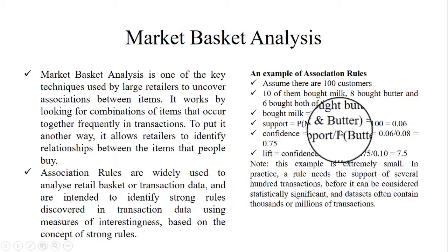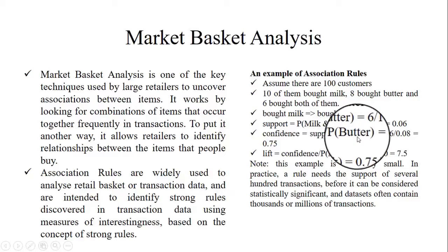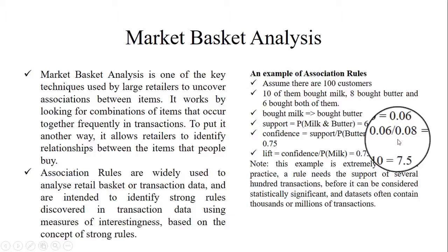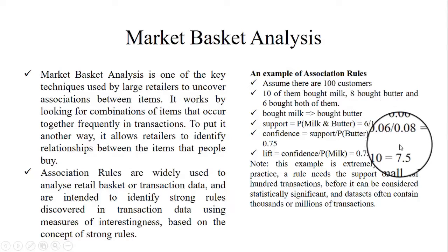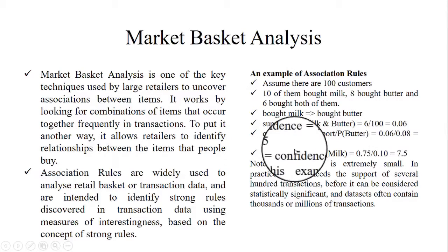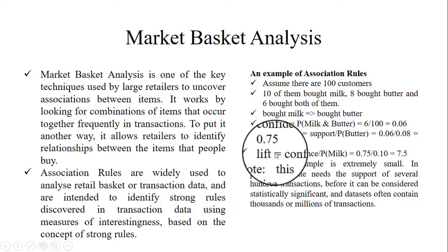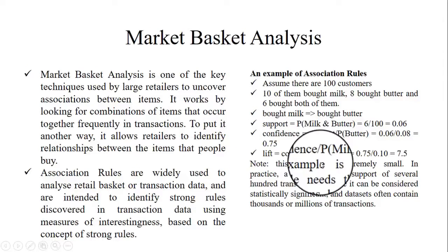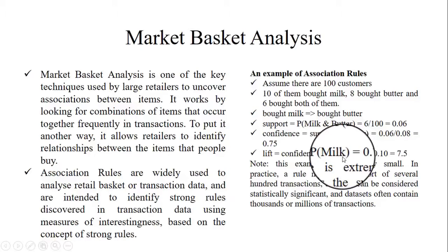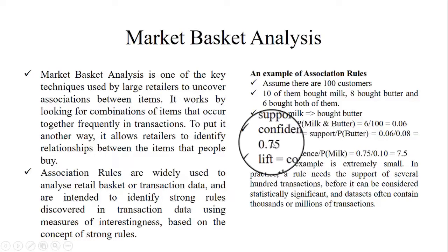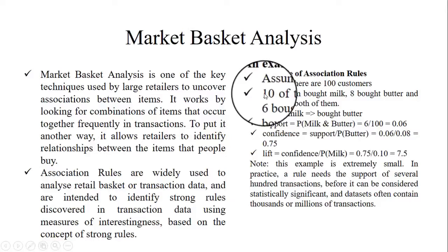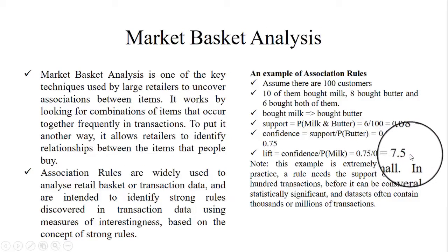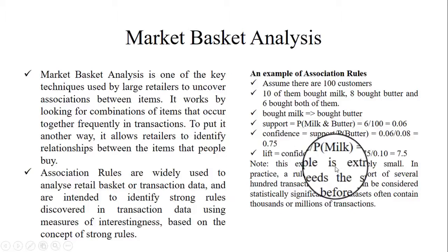Confidence is basically the support with respect to the probability of butter. The probability of buying butter is 8, so confidence is 0.06 divided by 0.08, which corresponds to 0.75. Lift is the confidence divided by the probability of milk. The confidence is 0.75 and the probability of milk is 0.10, which gives a lift of 7.5.